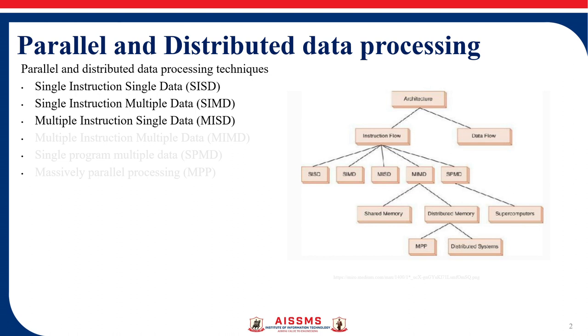The distributed systems can be located on the same physical network in a single location, or can be dispersed over a network of geographically dispersed locations.